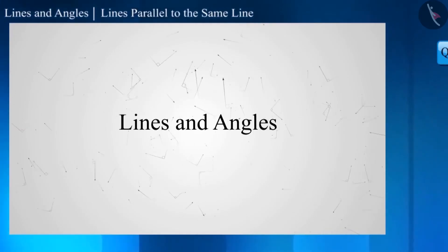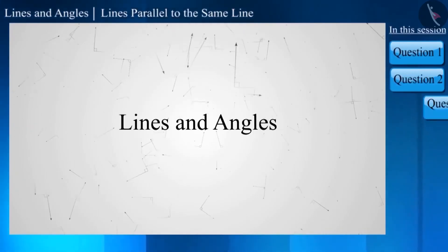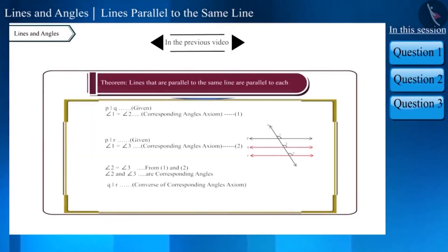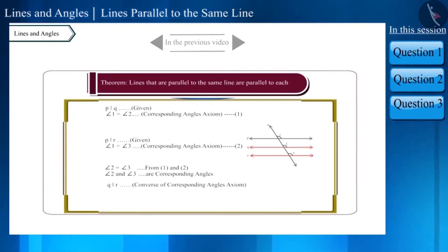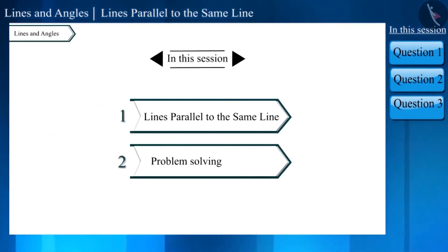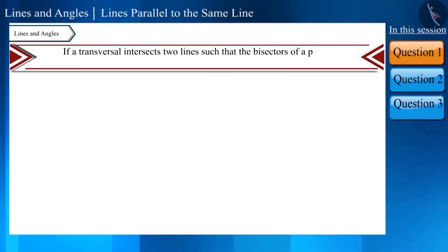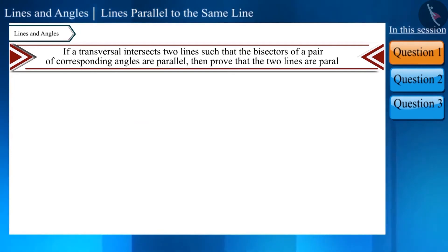Hello friends, welcome to this video on lines and angles. In the previous video we discussed the properties of lines parallel to the same line. Today we will solve some questions. First question: if a transversal intersects two lines such that the bisectors of a pair of corresponding angles are parallel, prove that the two lines are parallel.